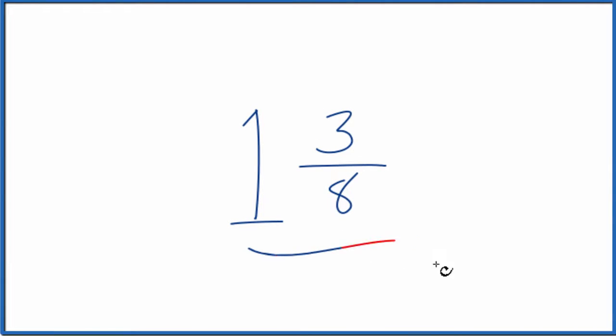Let's write the mixed number 1 and 3/8 as an improper fraction. So right now this is a mixed number because we have our whole number, that's the 1, and then the 3/8, that's the fraction part. To get this to be an improper fraction, here's how we do that.